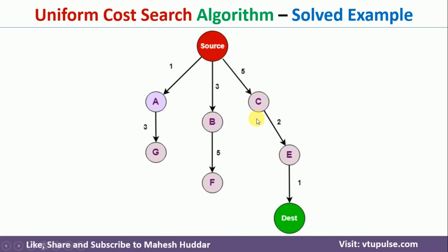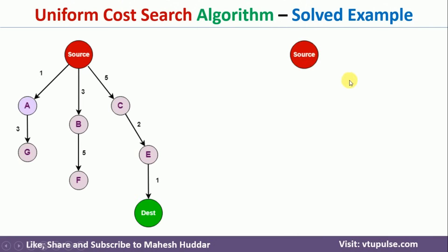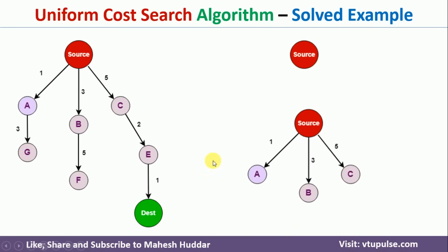Now we will take a simple example to understand this algorithm. Assume this is the graph given to us, with a source node and a destination node. We start exploring the graph from the source node. Since the source is the only node in the priority queue, we try to expand it. As it is not a goal node, we expand it and get A, B, and C as three possible child nodes.